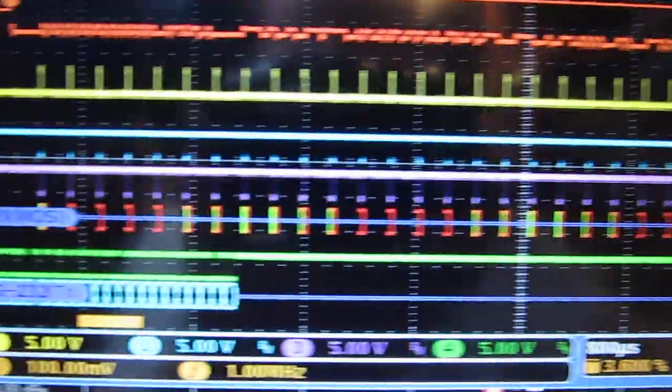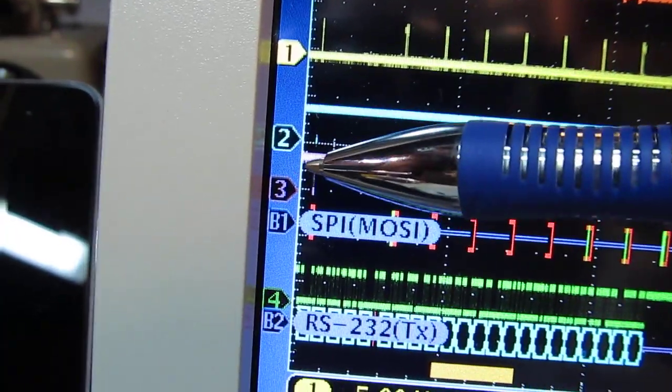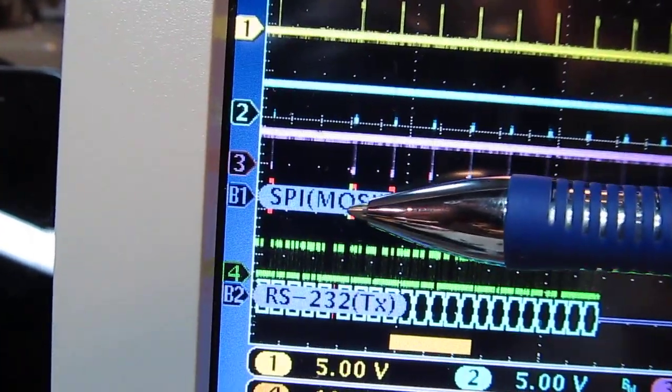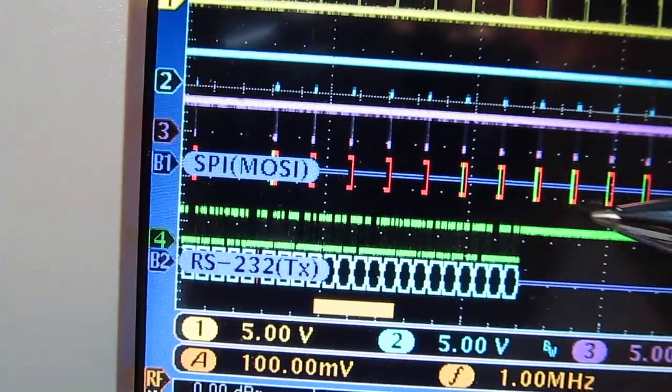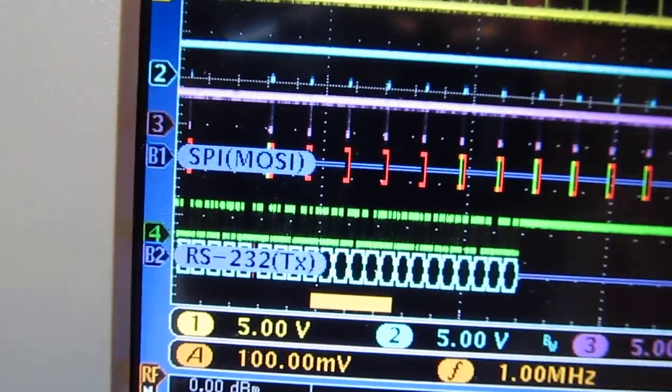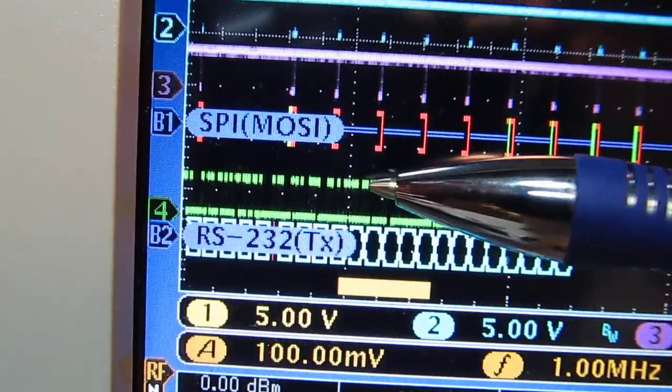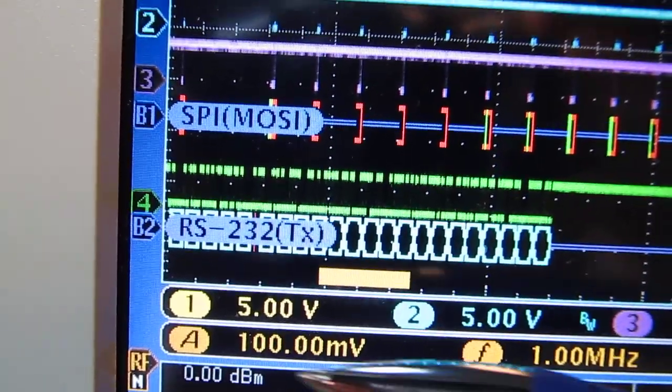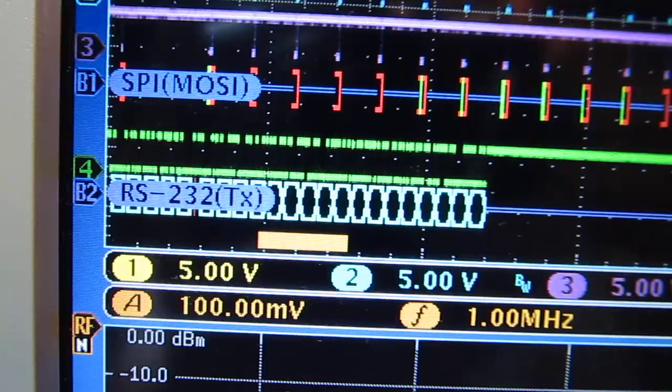The other traces that we have channel 1, 2, and 3 right here are those three lines for the SPI bus. So I've got them displayed here and then the SPI bus decode is shown in here. We'll zoom in on this in a moment to actually look at some of the data that's being sent. And then channel 4 this is the RS-232 line and its decode is going to be shown in here.